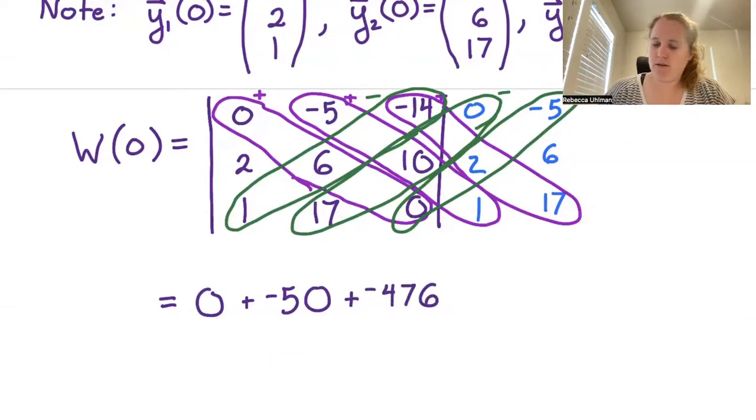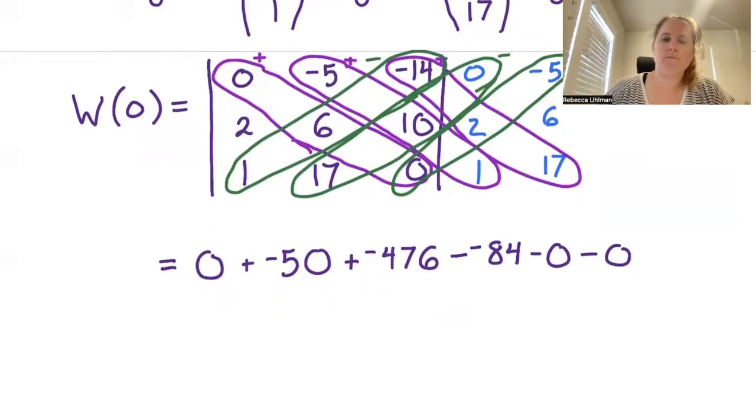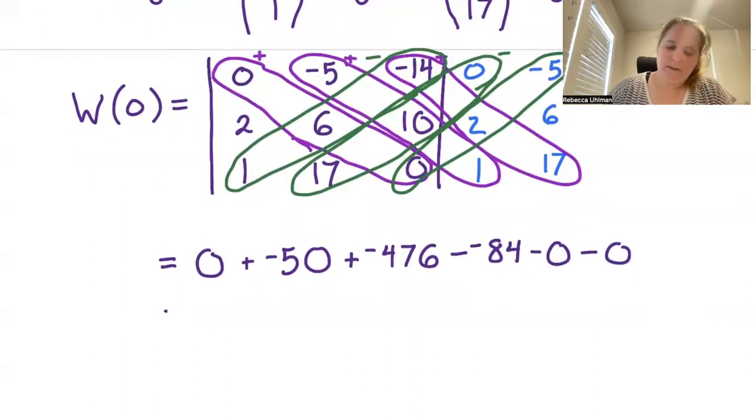On the backwards diagonal, we have minus negative 14 times 6, so we're subtracting off a negative 84, and then we subtract off 0 and subtract off another 0. We're looking at negative 50 plus negative 476 plus 84, and we wind up with negative 442, which is definitely not equal to 0.